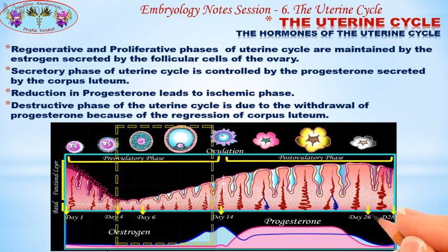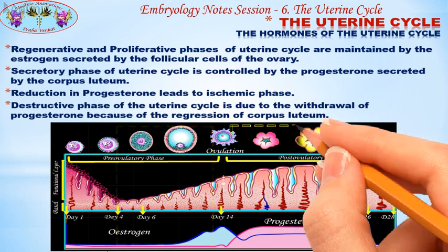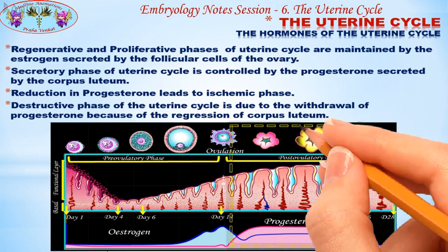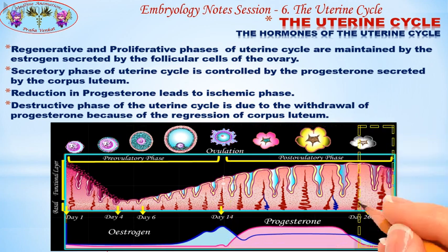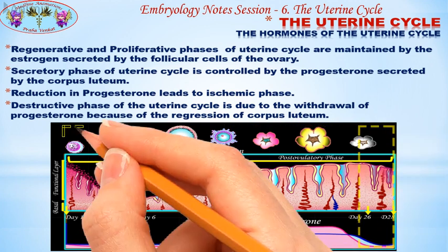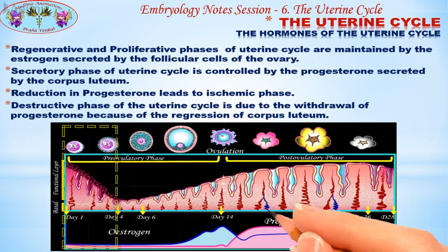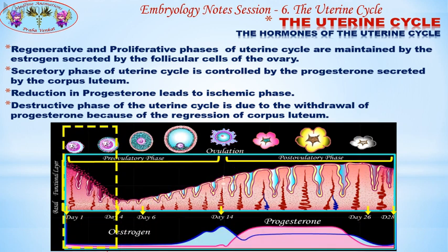The regenerative and proliferative phases of the uterine cycle are maintained by estrogen secreted by the follicular cells of the ovary. The secretory phase of the uterine cycle is controlled by progesterone secreted by the corpus luteum. Reduction in progesterone leads to the ischemic phase. The destructive phase of the uterine cycle is due to the withdrawal of progesterone because of the regression of the corpus luteum.